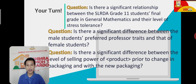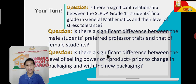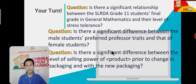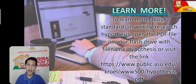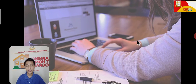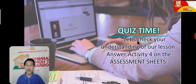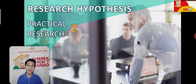That is how you craft your research hypothesis. Always remember: there are two types — null and alternative. The null says it will not happen; the alternative says it will. There are three elements: the variables, the respondents or group of people being studied, and the predicted outcome. If you want to learn more, open the file named 'hypothesis' or visit the link on your learning modules. You can start answering activity four on your assessment sheets. That's it for lesson number three of Practical Research. I hope you learned well. Thank you and God bless.